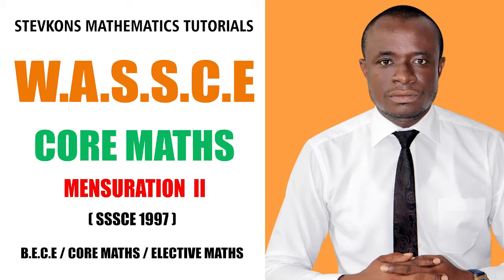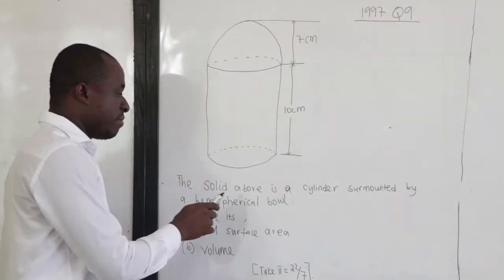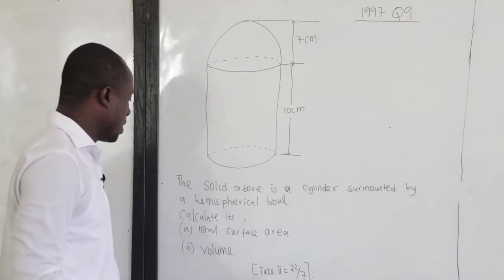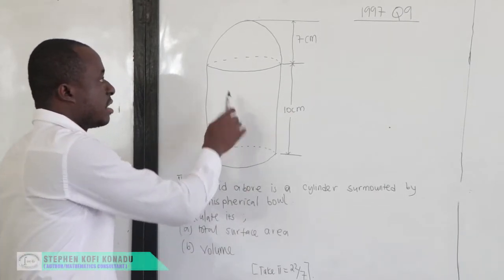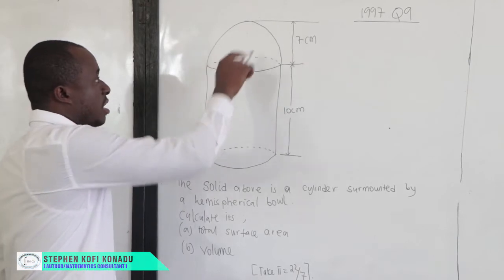This is 1997, Question number 9. The solid above is a cylinder surmounted by a hemispherical bowl. So this is the cylinder and then there is a hemisphere.